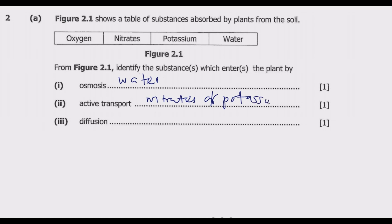You can put either of these two ions, or you can say both nitrates and potassium, or you can pick one — you will still be awarded the mark. Now let us look at the substance absorbed through diffusion.